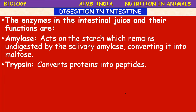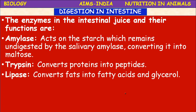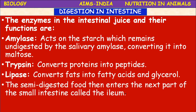Starch is converted to maltose in the presence of amylase enzyme. Trypsin is the enzyme present in pancreatic juice; it converts proteins into peptides. Lipase acts on fats and converts them into fatty acids and glycerol — here fats means emulsified fats. Lipase only acts on emulsified fats, not directly on fats, because fats are more complex compared to proteins and carbohydrates. The semi-digested food is now called chyle — previously in the stomach it was called chyme, which is acidic in nature; now it is called chyle, which is somewhat basic in nature.